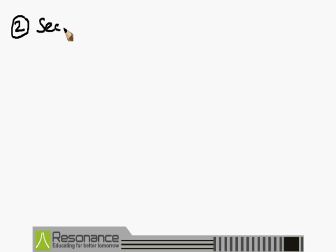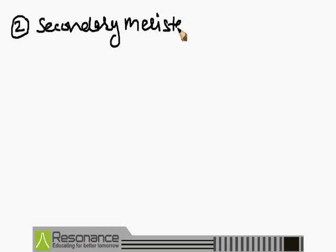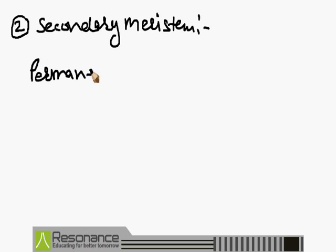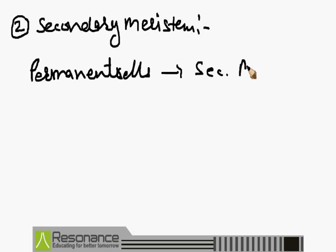The second type is known as the secondary meristem. This meristem is developed from the permanent cells — the permanent cells which do not generally divide. But in such type of cells, these permanent cells regain their regeneration power and form new cells. It means they divide again and form new tissue. We call them secondary meristem. This meristem is responsible for the secondary growth of the plant body.